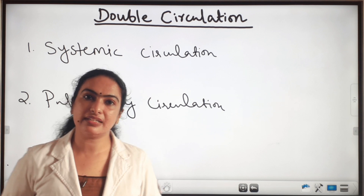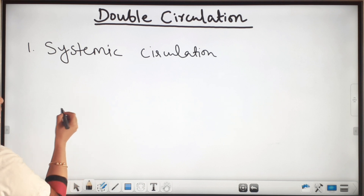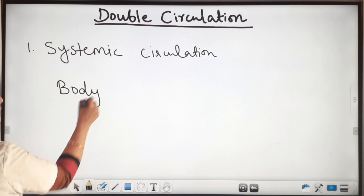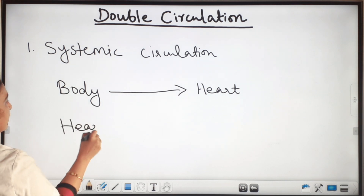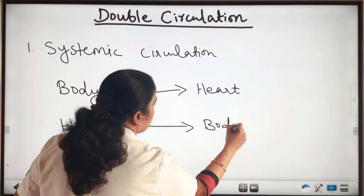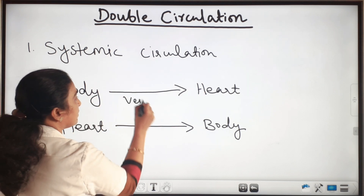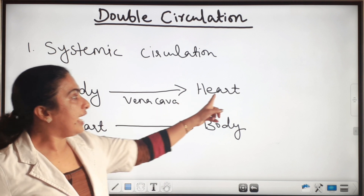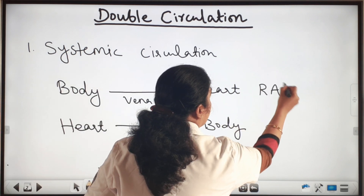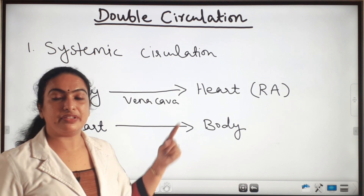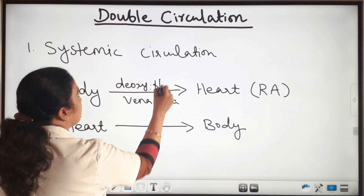Now we can see the systemic circulation in detail. In systemic circulation, there is a circulation of blood from the body to the heart and from the heart back to the body. The blood from the body enters into the heart through the vena cava. Which chamber receives blood from the vena cava? Right atrium. Which type of blood — oxygenated or deoxygenated? Deoxygenated blood.